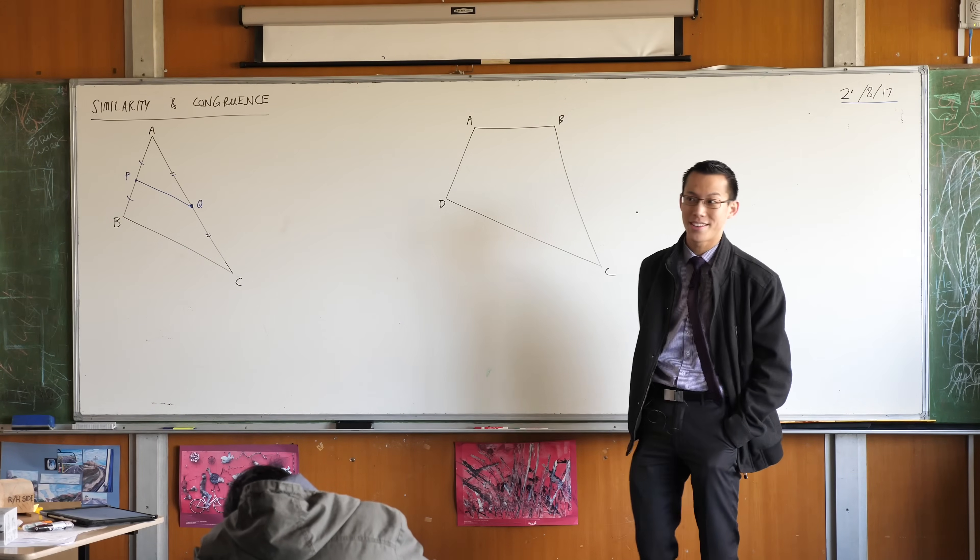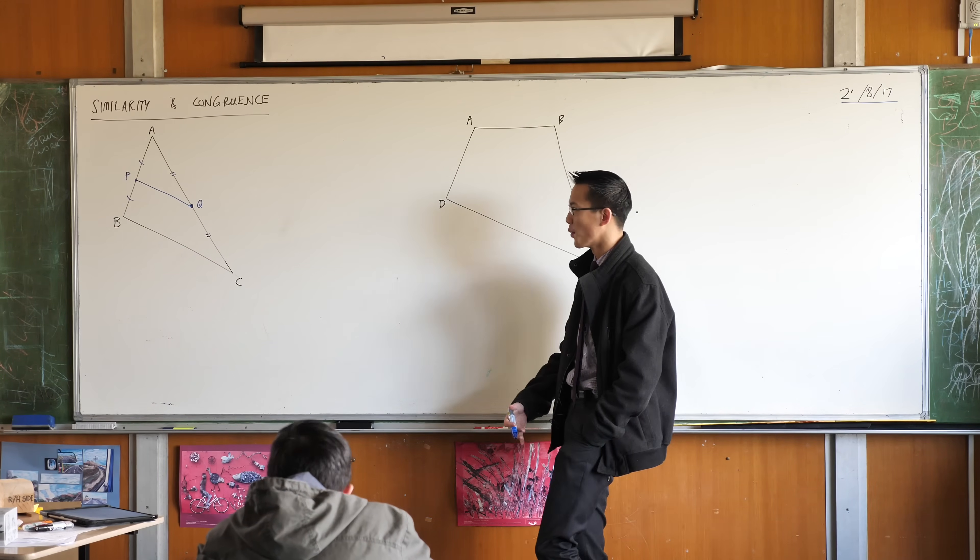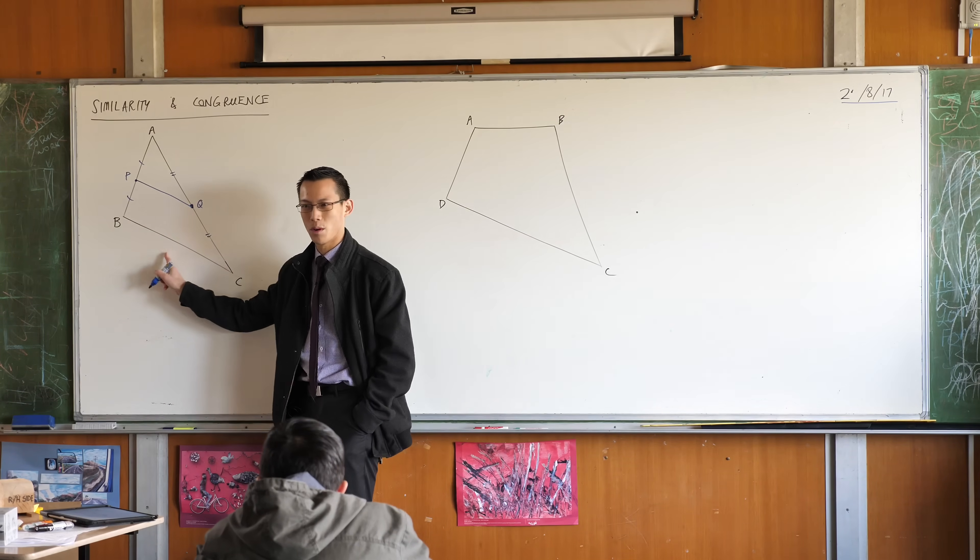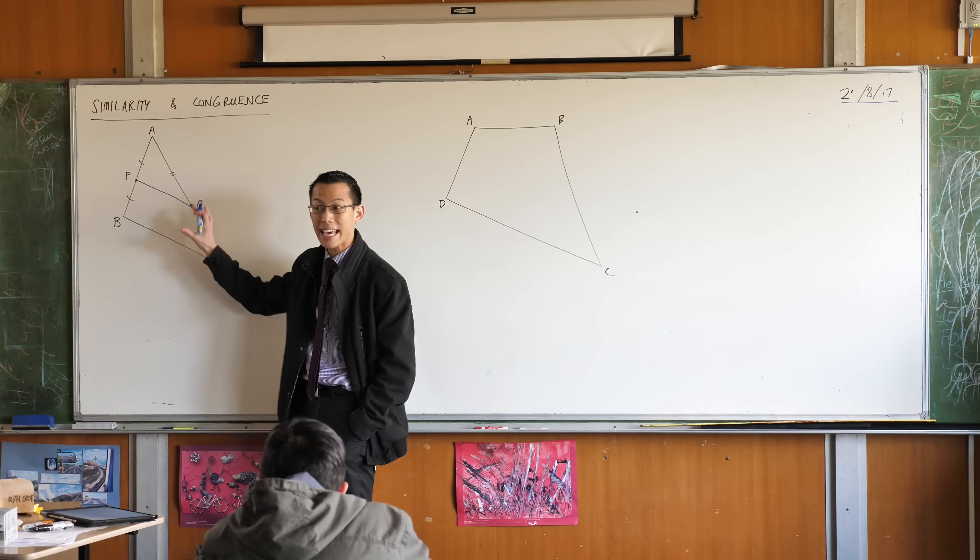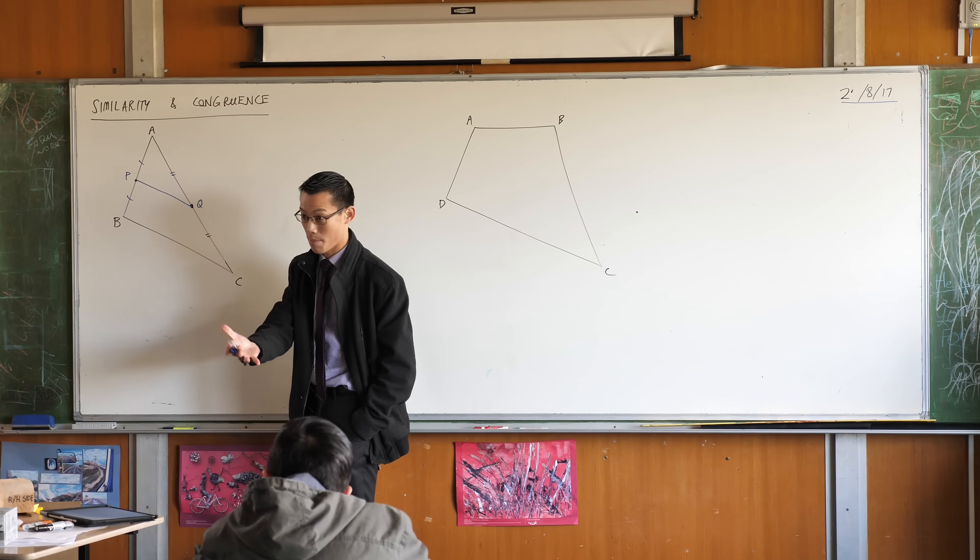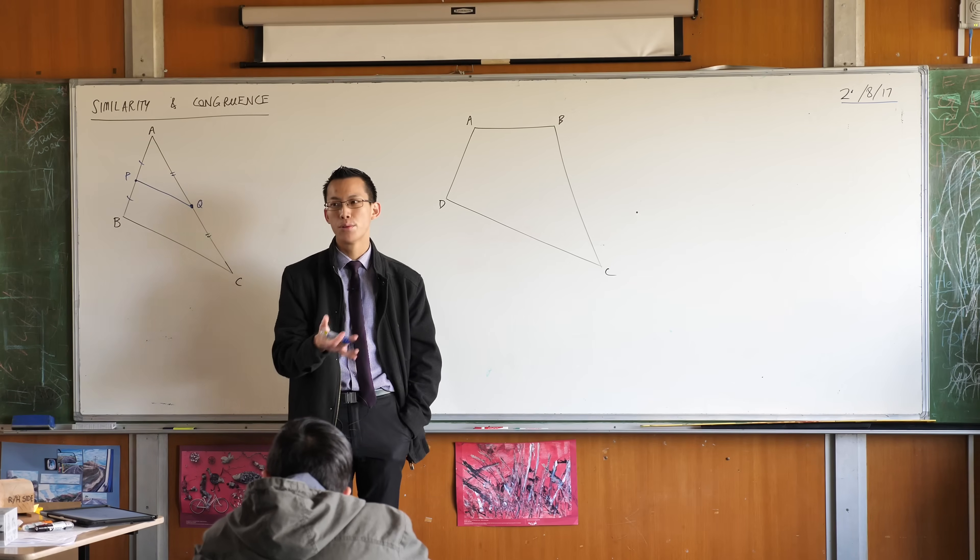Do you notice that interval PQ has a relationship with the rest of the triangle? Namely, see this last side down here, the one we didn't bisect? Do you notice that these two lines are, well they look like they're parallel, right? Now can we prove that this is the case?